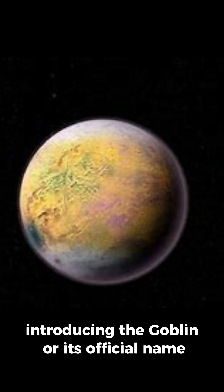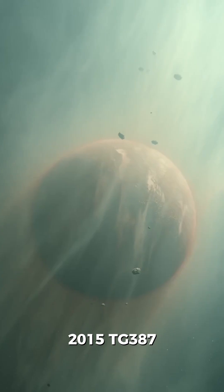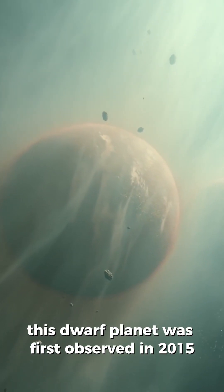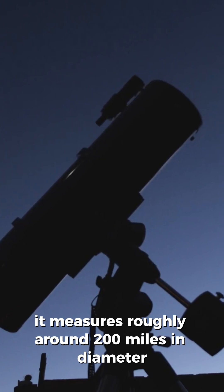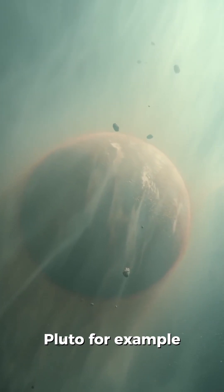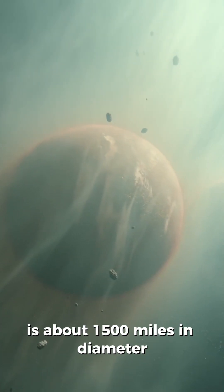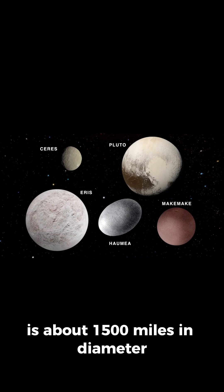Introducing the Goblin, or its official name 2015 TG387. This dwarf planet was first observed in 2015 by astronomers and measures roughly around 200 miles in diameter. Pluto, for example, is about 1,500 miles in diameter.